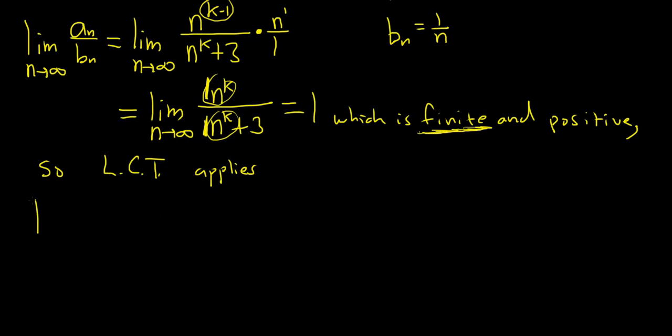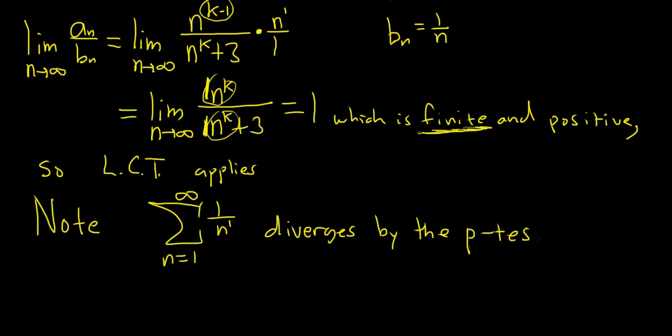Well, we know something about the sum of the B's. So note, if you look at the infinite sum, as n runs from one to infinity of the B's, so one over n, this is a P series with P equals one. So this diverges by the P test since P is equal to one, which is less than or equal to one.